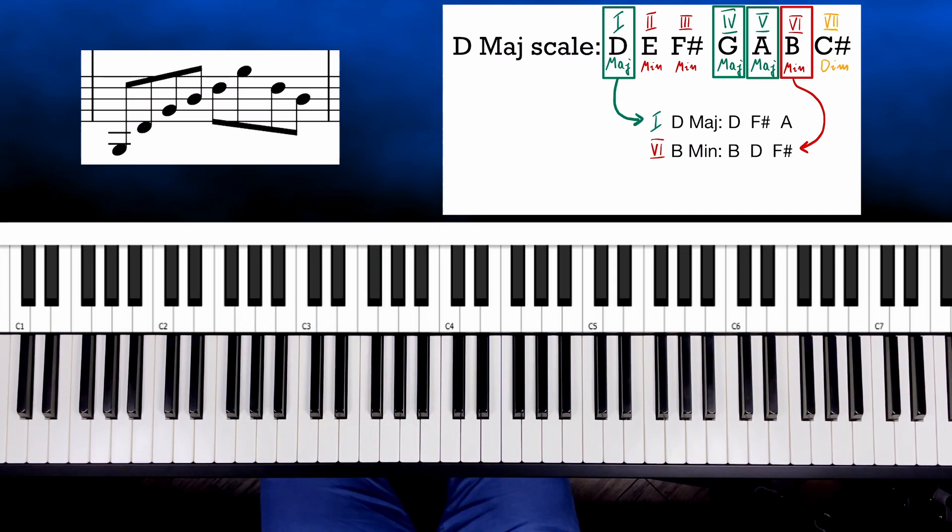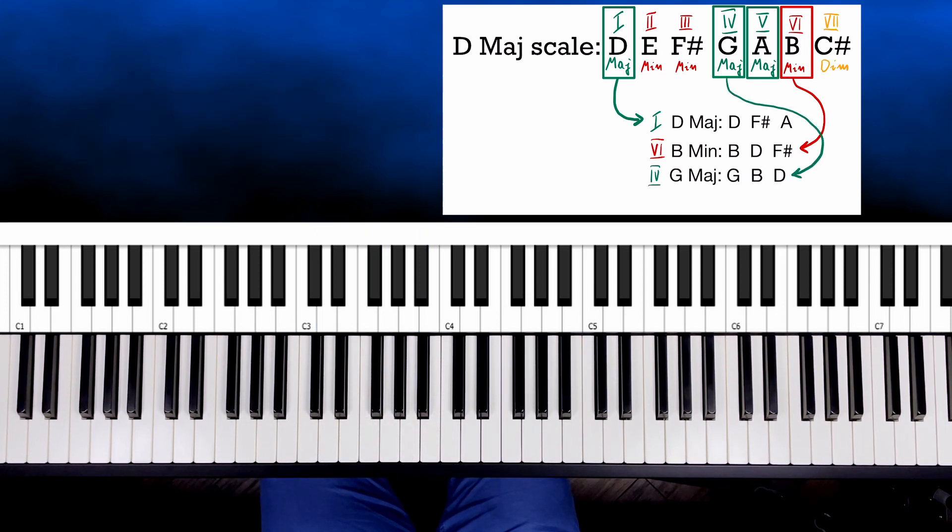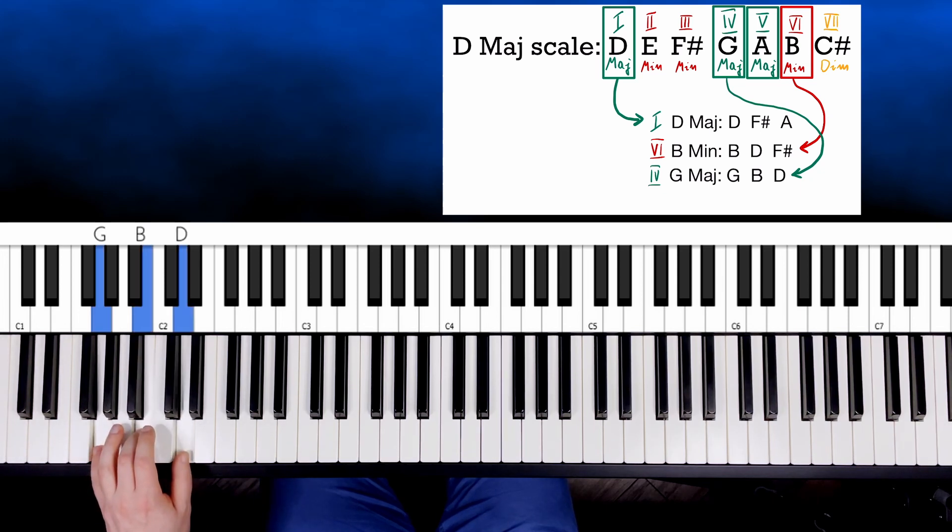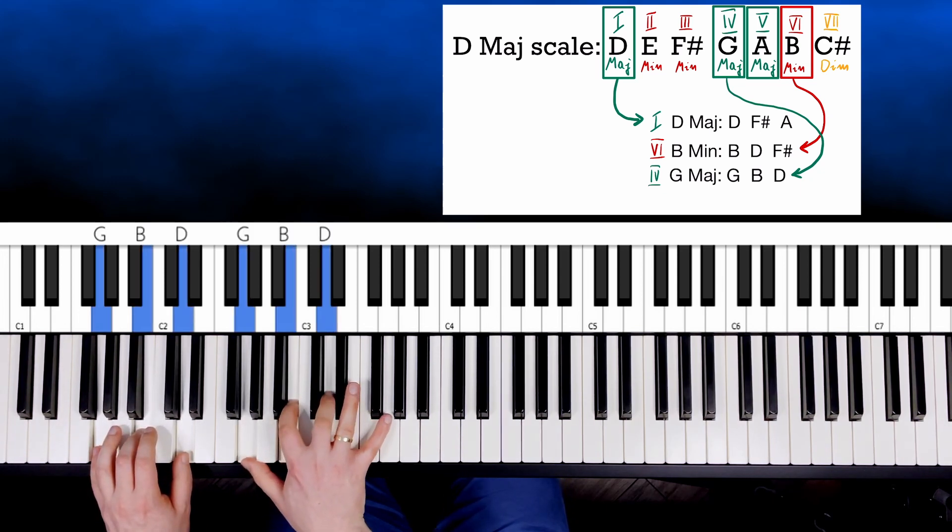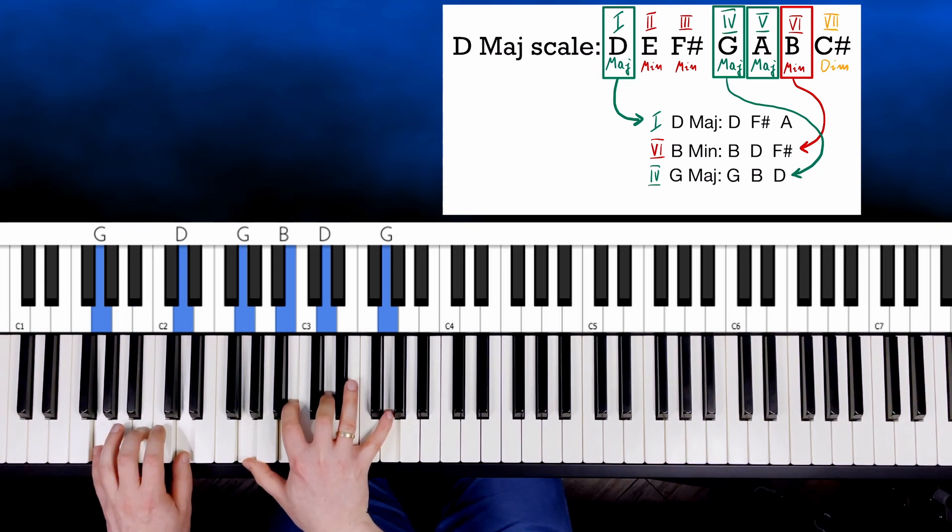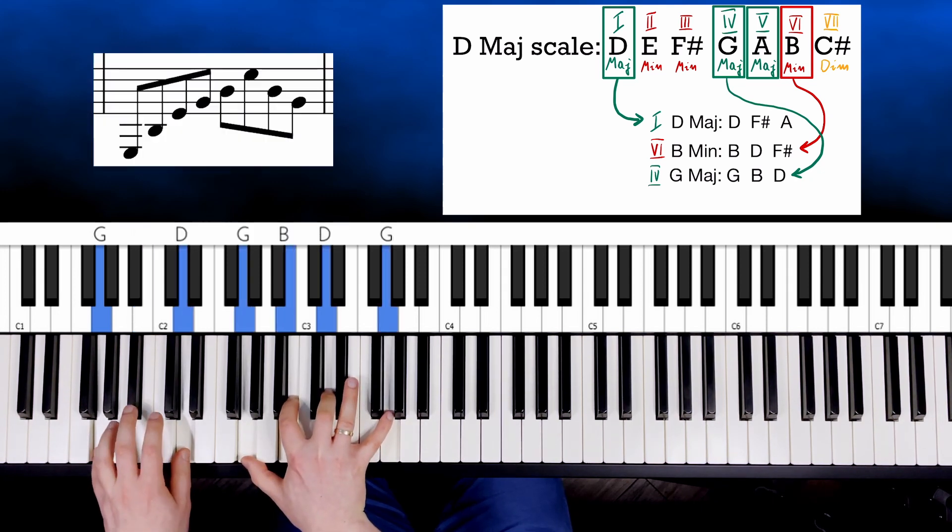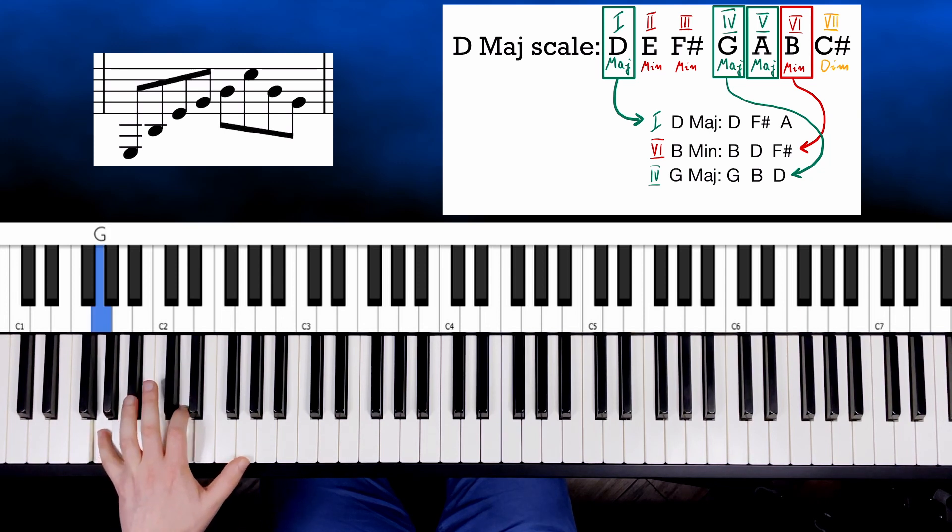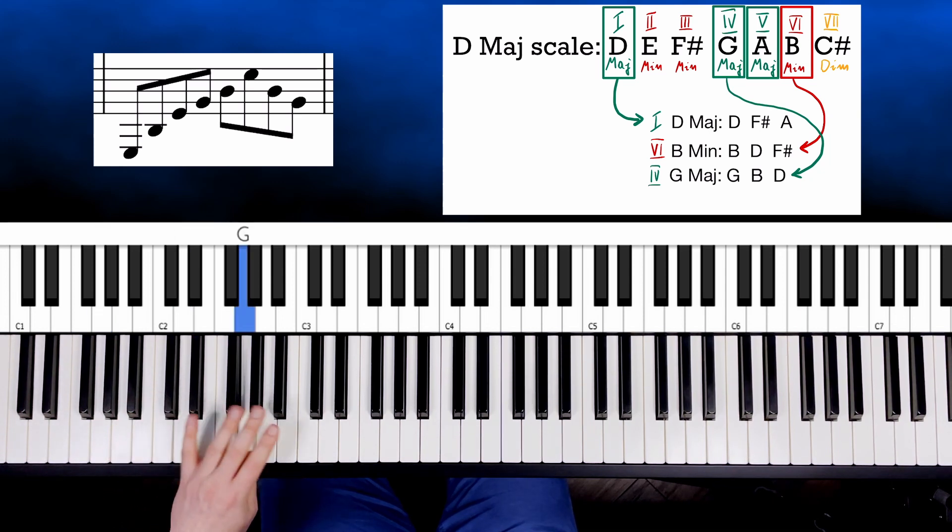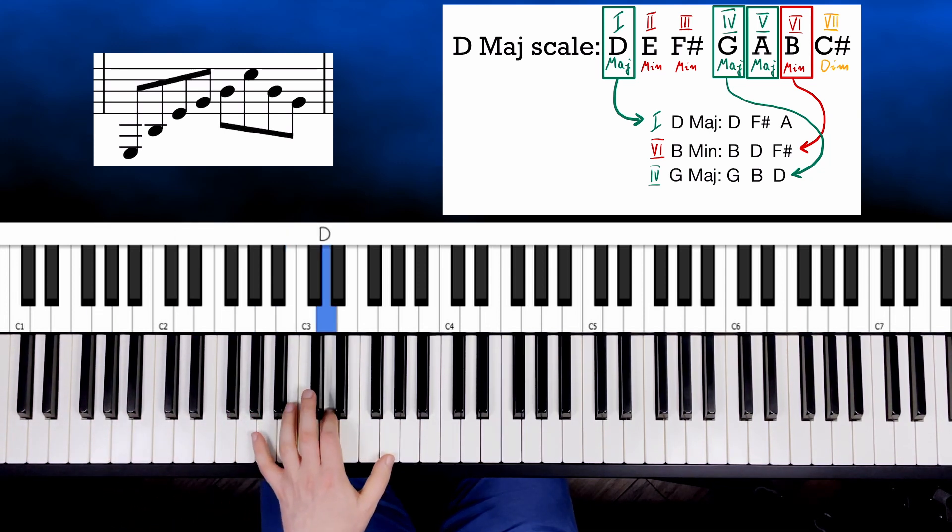Next G major with notes G, B, D. So they are here, also here, and the next G. All notes without this second note. So G, D, G, fourth finger to B, D, G, and back to D and B.